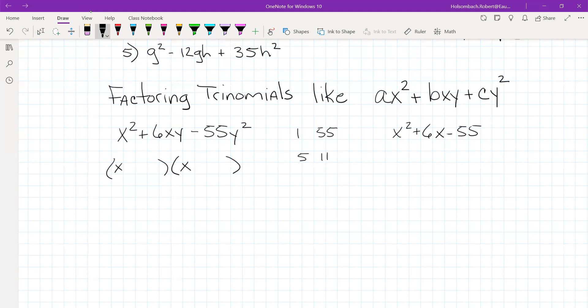Okay, so remember, if this third term in the trinomial is negative, then we need to have a positive and a negative factor. If the second term in the trinomial is positive, then our largest factor needs to be positive. So the 11 is going to have to be positive.